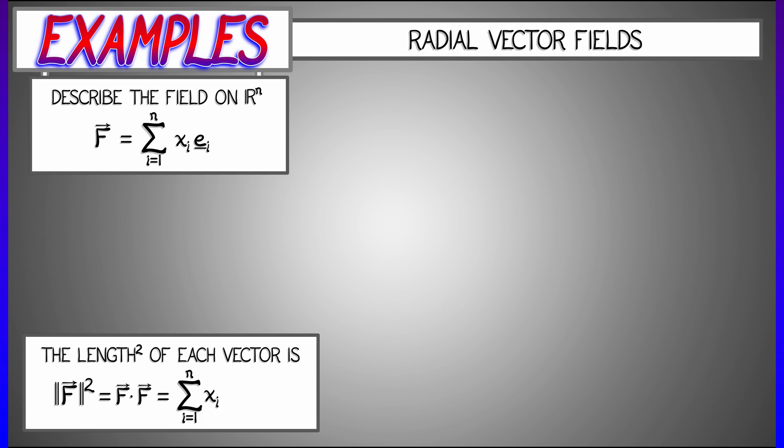Well, that dot product is going to be the sum as i goes from 1 to n of xi squared, so that you have something that is getting longer and longer and longer as you move out away from the origin.